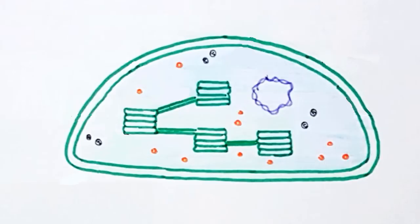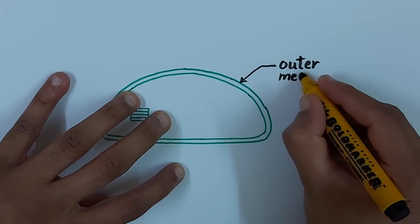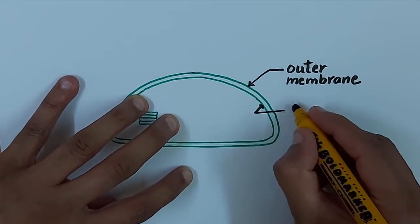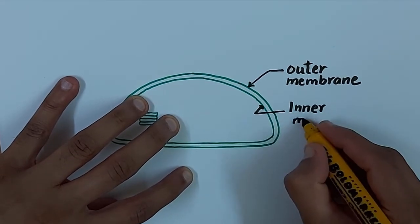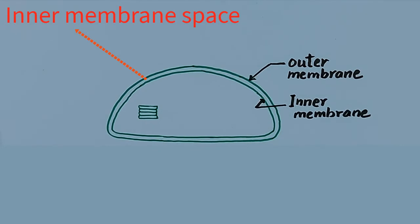Let us review all the parts by labeling them. This is the outer membrane. This is the inner membrane. Between the two membranes, there is an inter-membrane space.